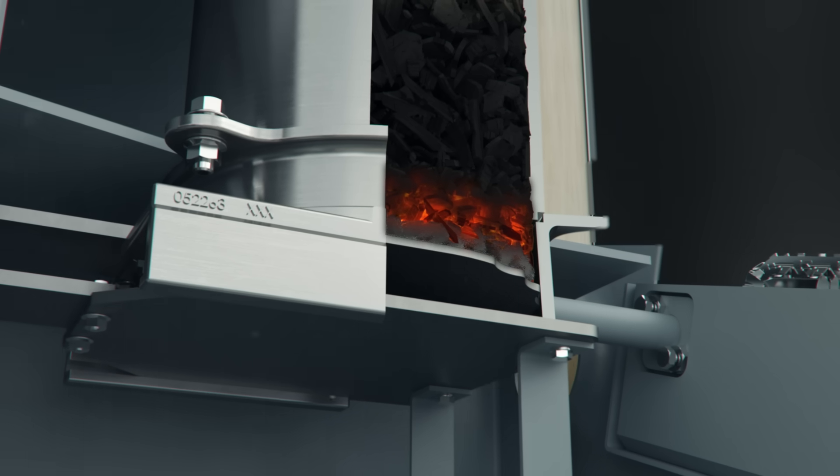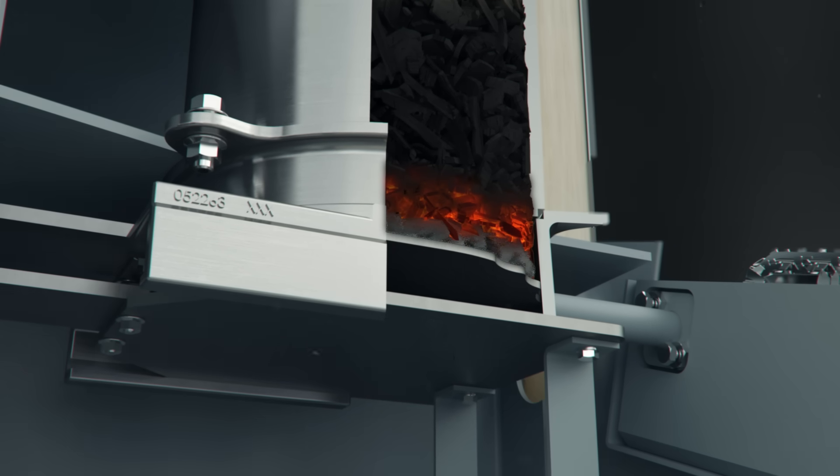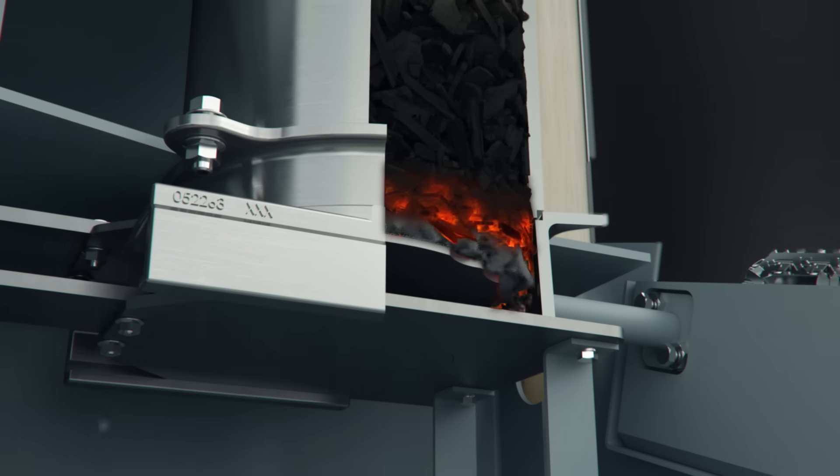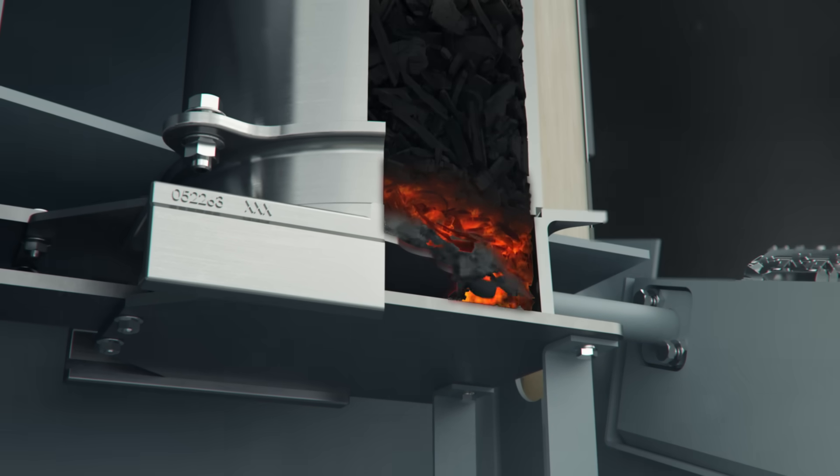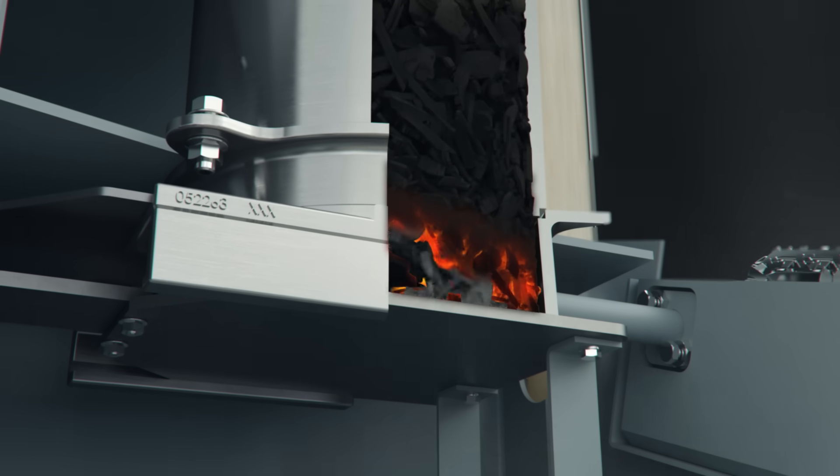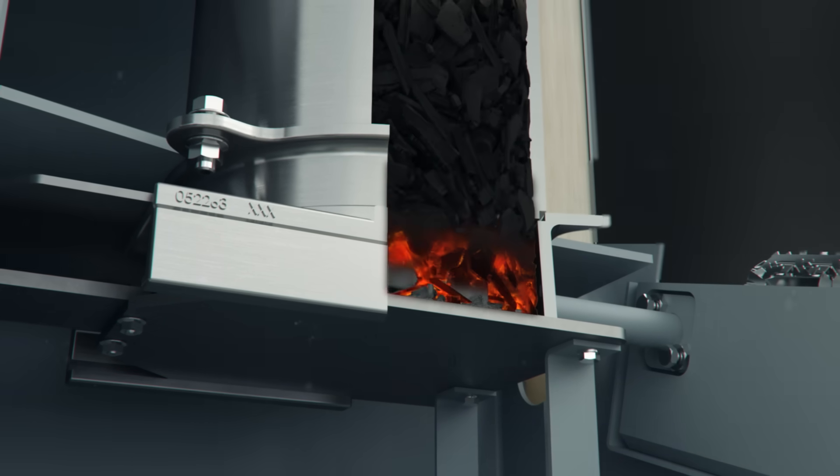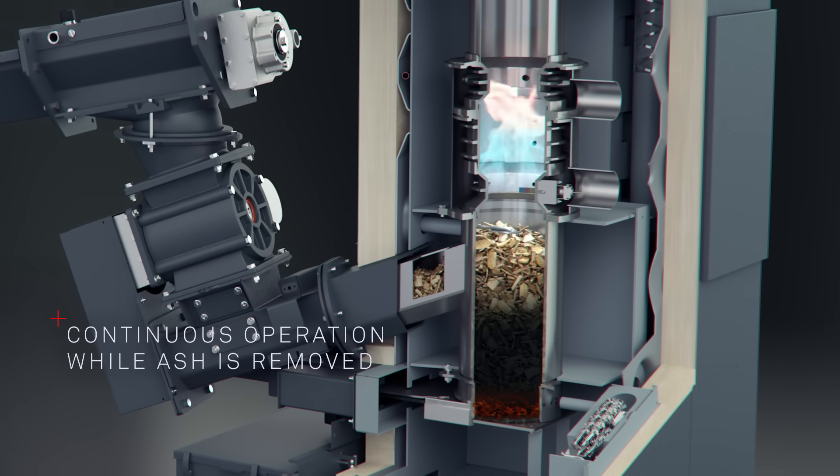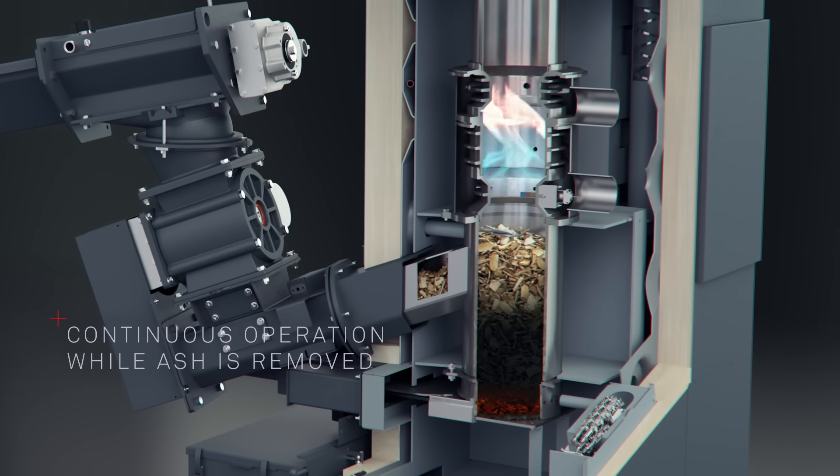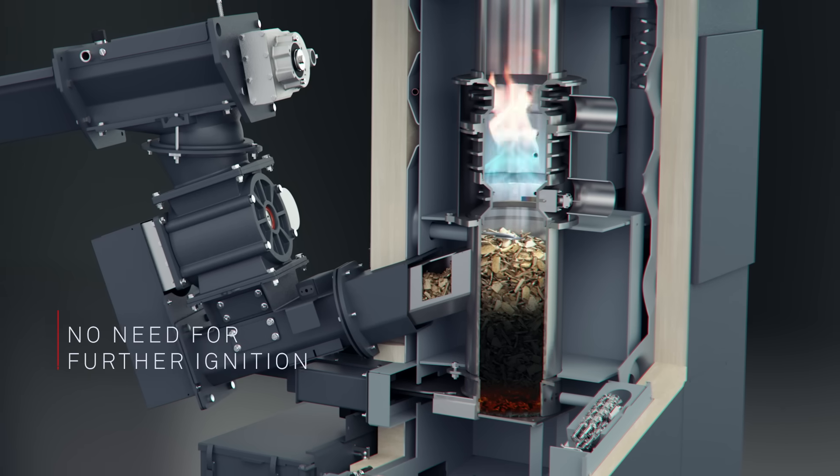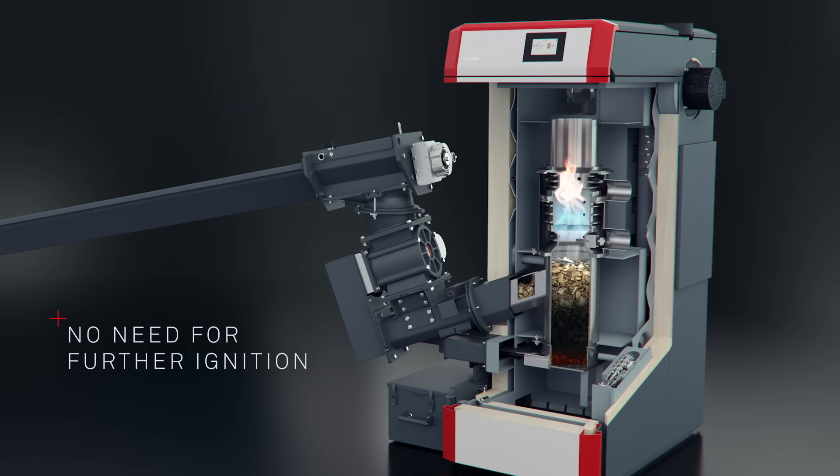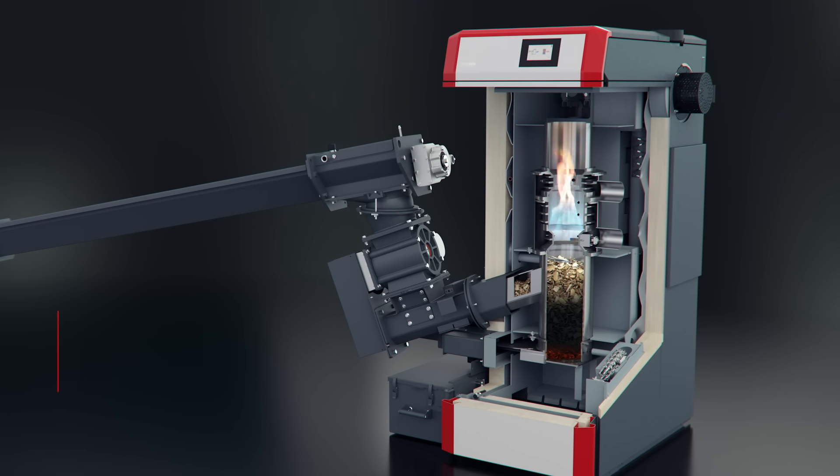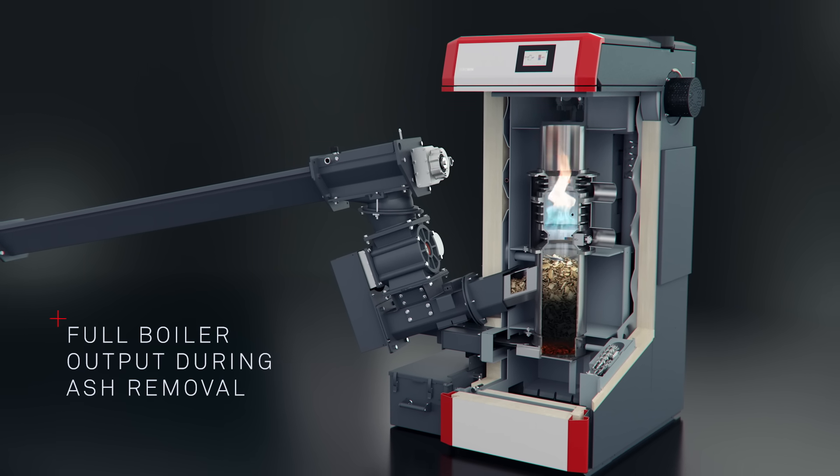The ash removal plate closes again and the ember bed slide above it opens, causing the ember bed and wood chip to slide through. Through this process, our development engineers ensure that the PuroWin can be operated continuously. There is no need for further ignition and ignition energy is thereby cut. This procedure also means that the boiler output is fully maintained during ash removal.